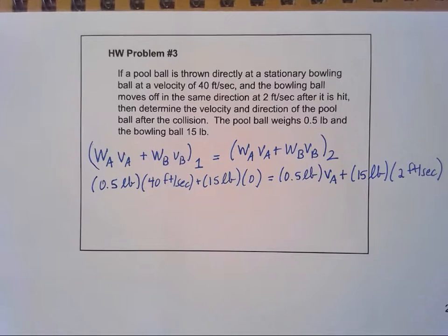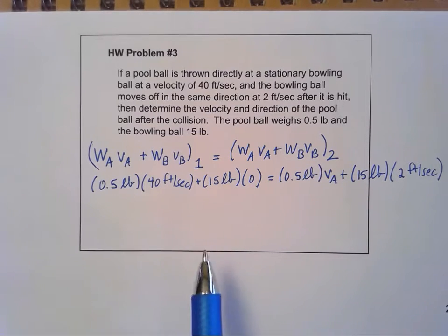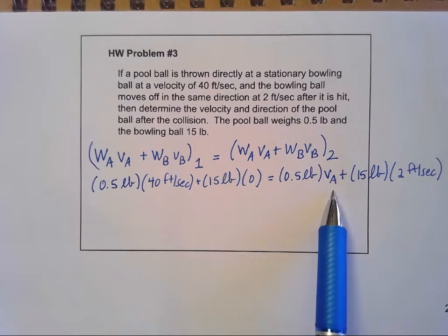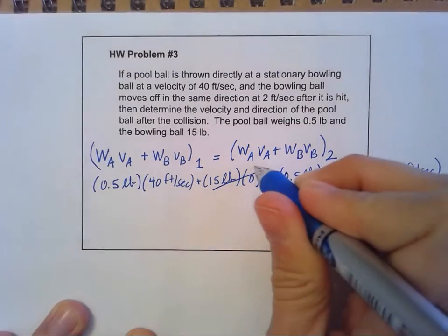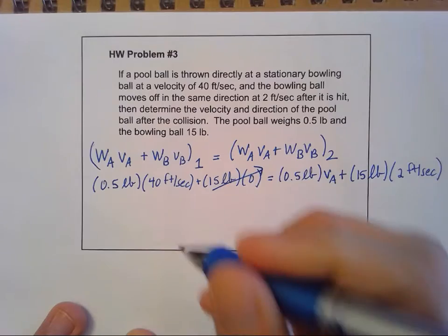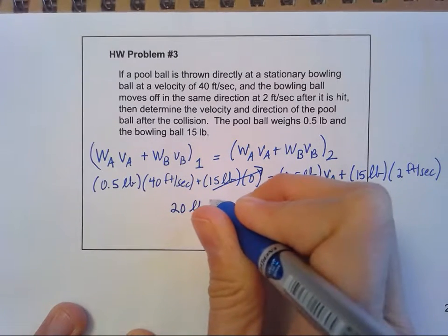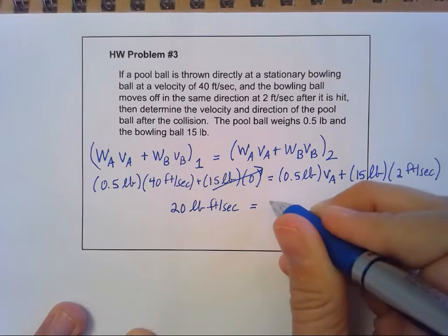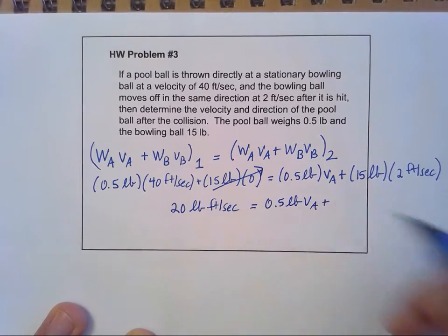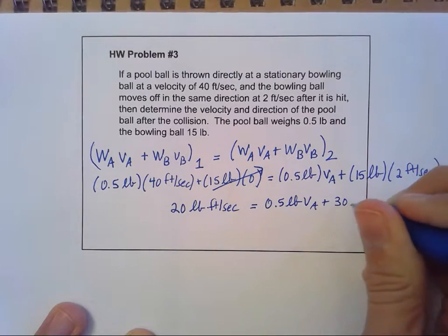In order to solve this, before you start doing a lot of moving things from side to side, the best idea is to simplify each side as far as you can before you start trying to solve for this VA. When we're doing algebra, remember from math, we want to put our like terms together before we start isolating the variable. So this one we know is going to go to zero. But we've got 0.5 times 40, so that's going to be 20 pound foot seconds. And then I'm just going to rewrite this one, a half pound VA plus 15 times two is going to give me 30 pound foot seconds.